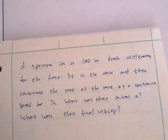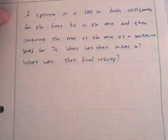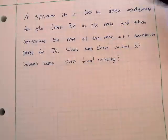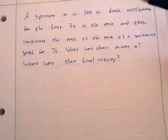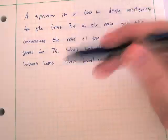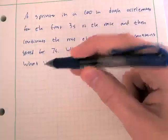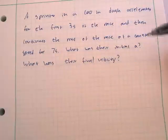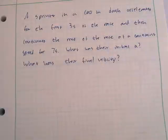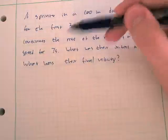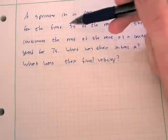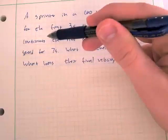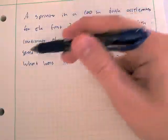Now let's move on to a more complicated example with more steps. A sprinter in a 100-meter dash accelerates for the first three seconds, then continues at constant speed for seven seconds, finishing the race in 10 seconds total. We want to know their initial acceleration and their final velocity. There are two distinct sections: an accelerating phase and a constant-speed phase, each requiring its own set of equations.